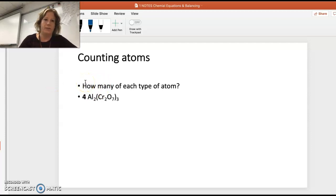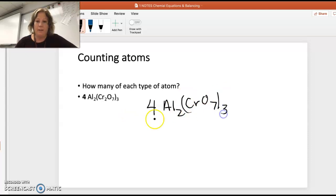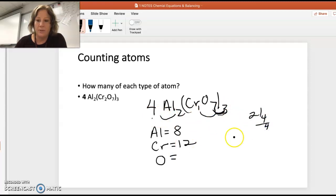First thing you have to be able to do is count the atoms. If I have a coefficient and then a compound, like 4Al2(CrO4)3, I need to be able to count all these atoms up. What I do is distribute the coefficient out to everything, and then any subscripts with the polyatomic ion get distributed inward. So I would have eight aluminums, chromium would be one times three, three here but then times four is 12, and oxygen would be 21 here times four which is 84.